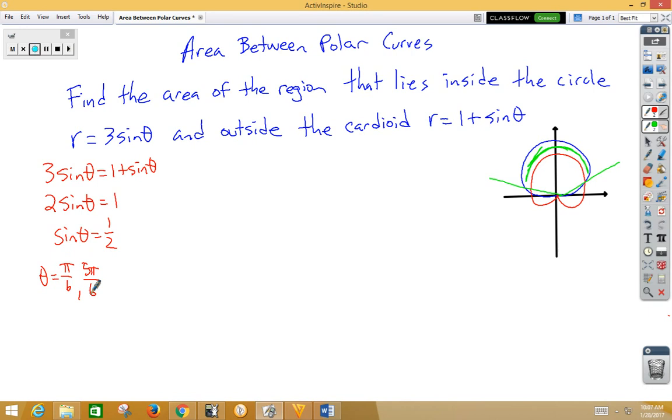Now we know that we're dealing with that part between pi over 6 and 5 pi over 6. You might have been able to guess that from the picture. Now let's go ahead and set up our integral. When we do this, we need to pay attention to the outer r and the inner r. If we think about outer r and inner r, we have clearly outer and inner.